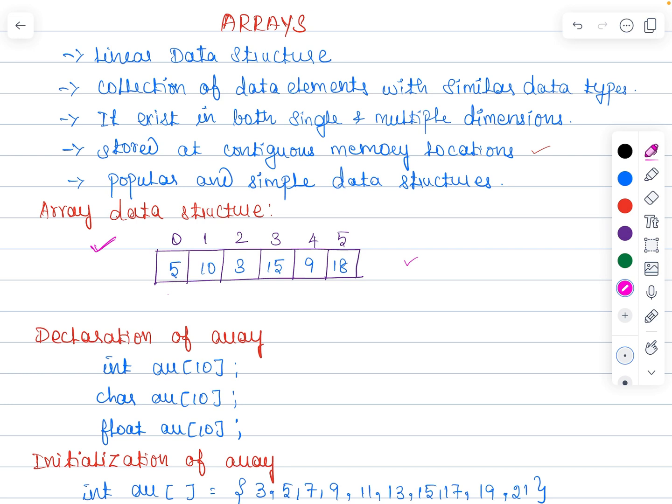If you want to access the first element it would point to 0th index and fetch the first element, if you want to access the last element it would point to the last index and fetch the last element. To access any element it takes the same amount of time.